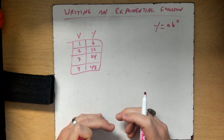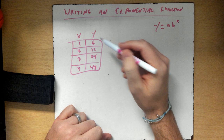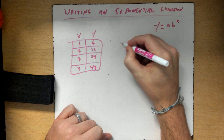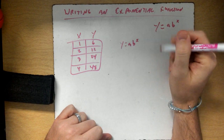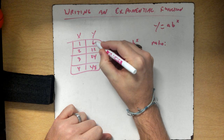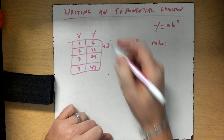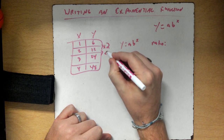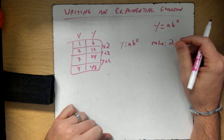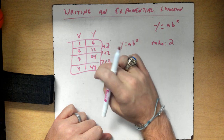First, we need to find our ratio — our pattern. Our x values go up by 1 each time. For our y values, we need to figure out the ratio. From 6 to 12, 6 times 2 equals 12. Then 12 times 2 is 24, and 24 times 2 is 48. So my ratio b equals 2 — every time we multiply by 2.